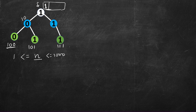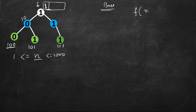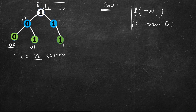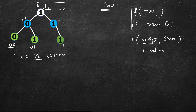Let's think of the base cases, as with other recursion problems. The first base case: if you call the function on a null root, return zero. The second base case: if you are at a leaf node, and we are keeping track of a running sum passed from the root to that leaf, then return the running sum itself.